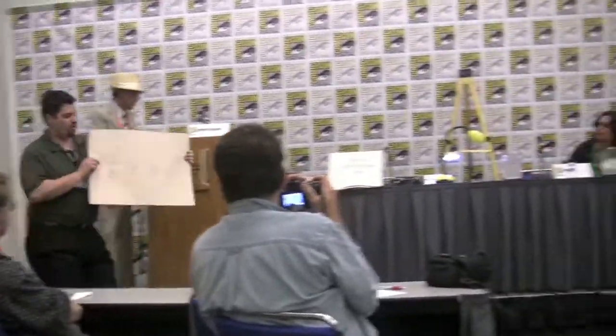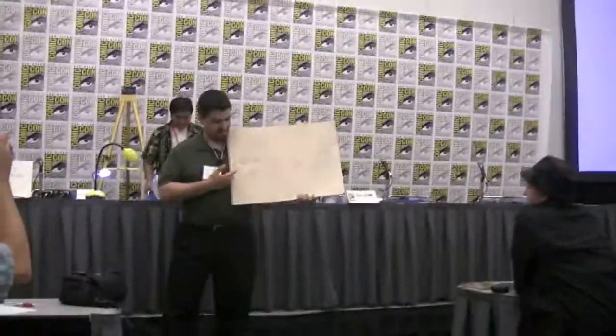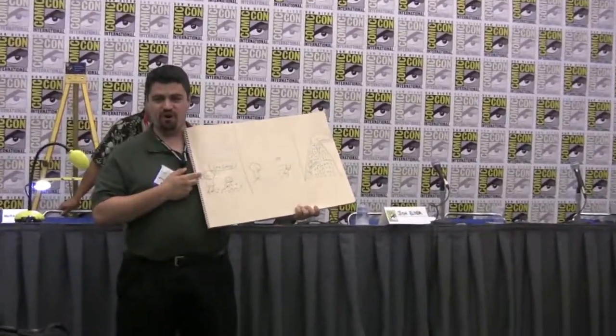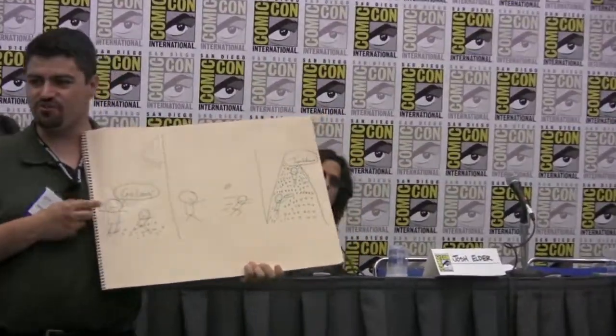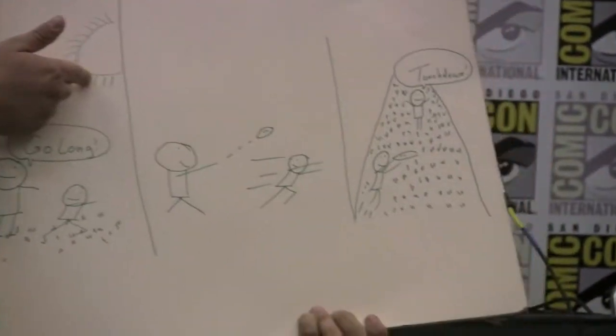It's three panels, a very simple story. Here's Dad. That's Junior. There's a football — it kind of looks like a pie, but I assure you it is, in fact, a football. Dad's yelling 'go long.' They're in the park. There's grass. It's summer. There's the sun.